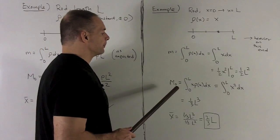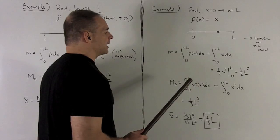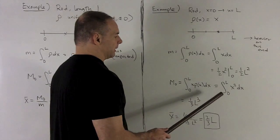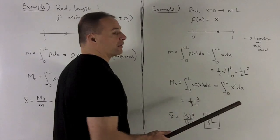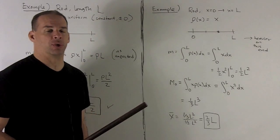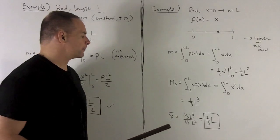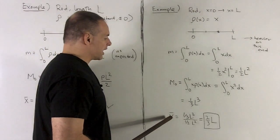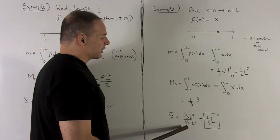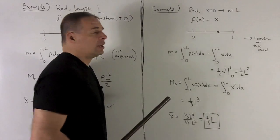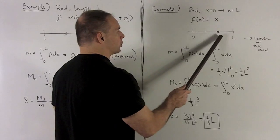For the moment about the origin, M₀ is the definite integral from 0 to L of x · ρ(x) dx, which equals the integral of x² dx. The antiderivative is x³/3, and evaluating at L gives L³/3. The center of mass is M₀ divided by the total mass: (L³/3) / (L²/2) = 2L/3. As expected, the center of mass is skewed towards the right, toward the heavier end.